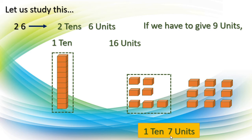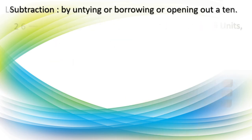Got this, children? Which method did we follow? We followed the untying and subtracting method. I hope you understood. Here: subtraction by untying, or borrowing, or opening out a ten.